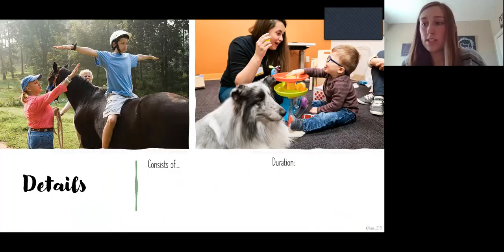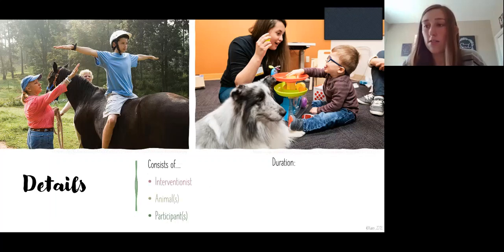So a little bit of details of AAI. According to O'Hare of 2013, they found that AAI consists of an interventionist, animals, and participants. The number of animals and participants really can vary, and if the animal is a service animal, no interventionist is required, but parents would be given training on how to use those features that a dog was taught or whatever type of animal.